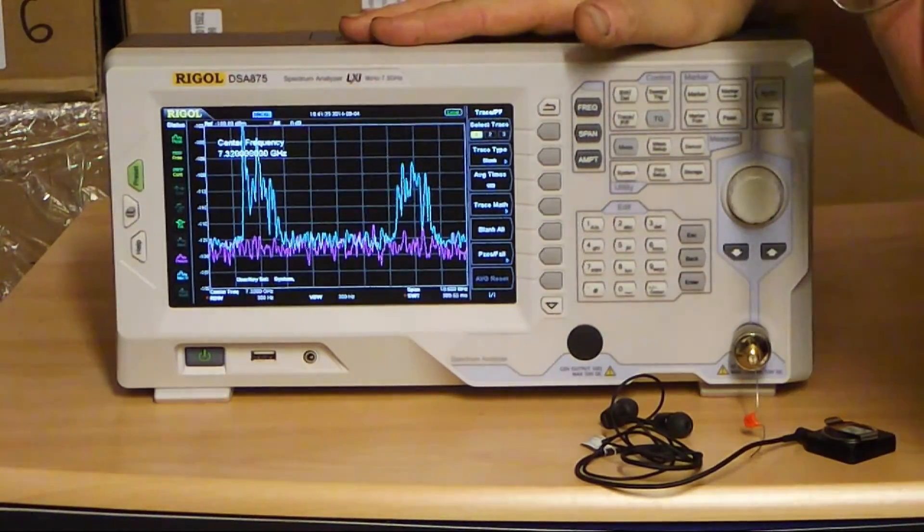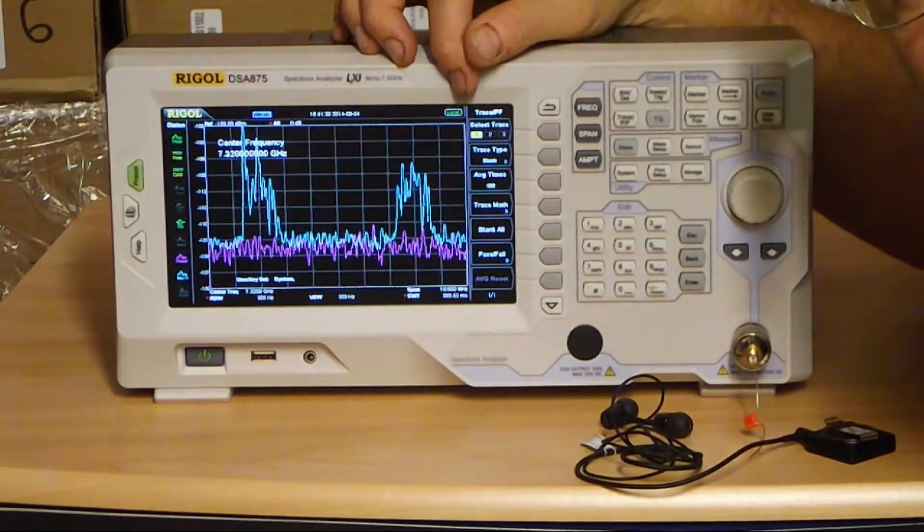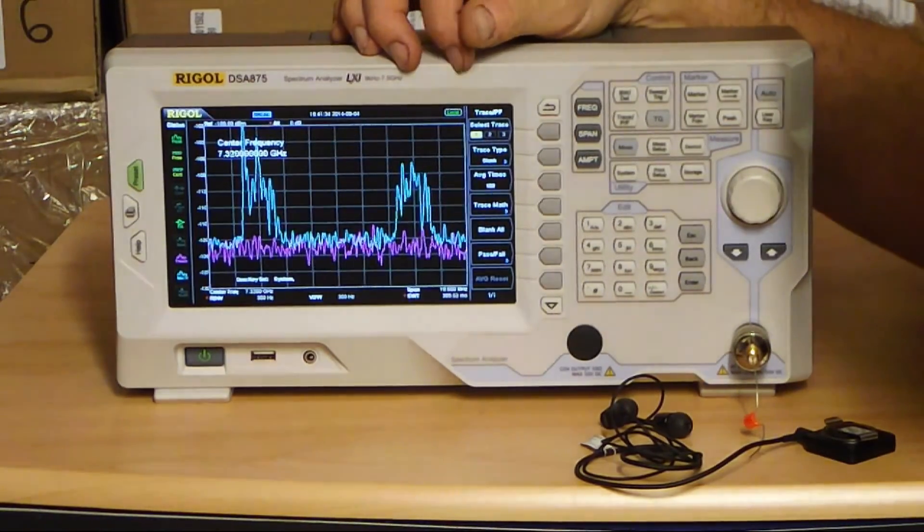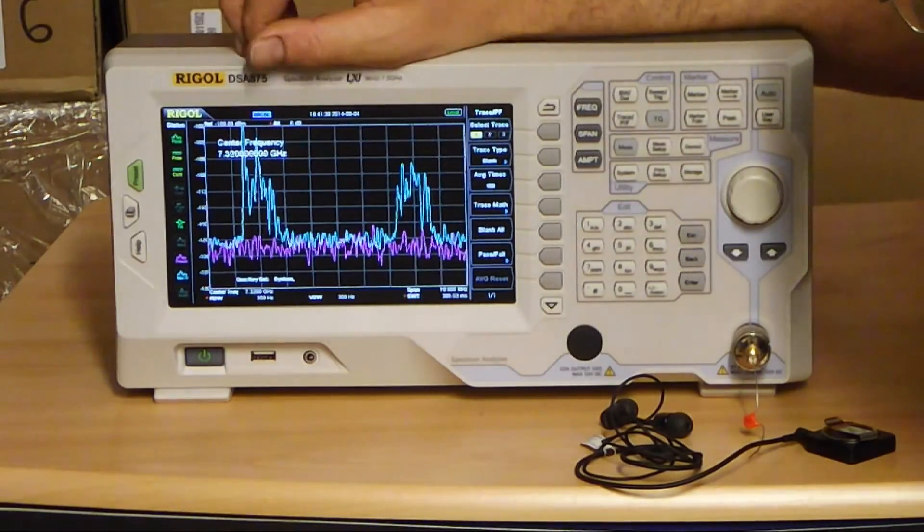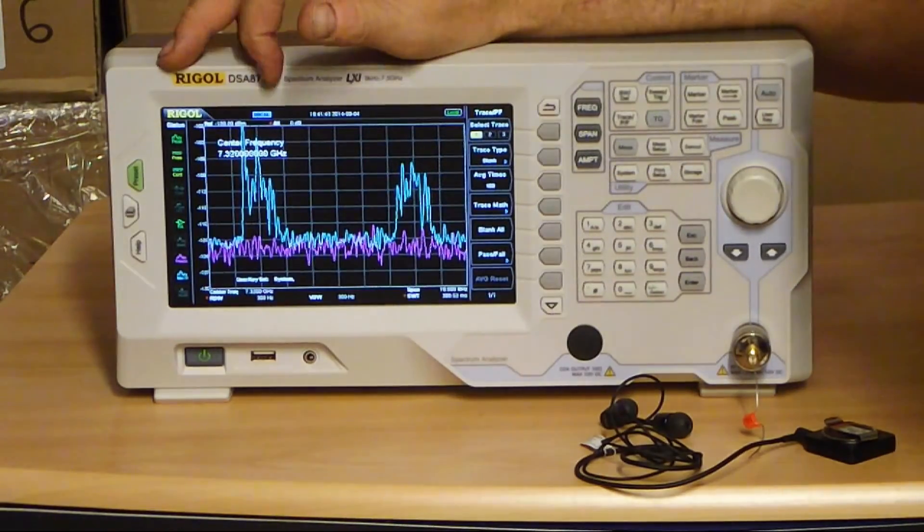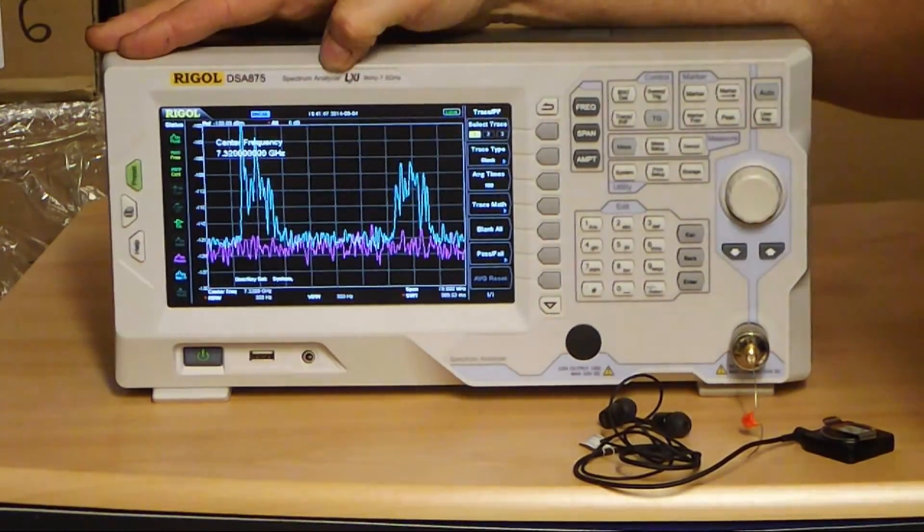So that illustrates the power of the Rigol DSA 875. But just looking at these very short and very intermittent signals, it's a very powerful tool for operating Bluetooth, ZigBee, any of the Wi-Fi standards up at about 2.4 gigahertz. You can see the third harmonics very, very clearly on this powerful Rigol analyzer.